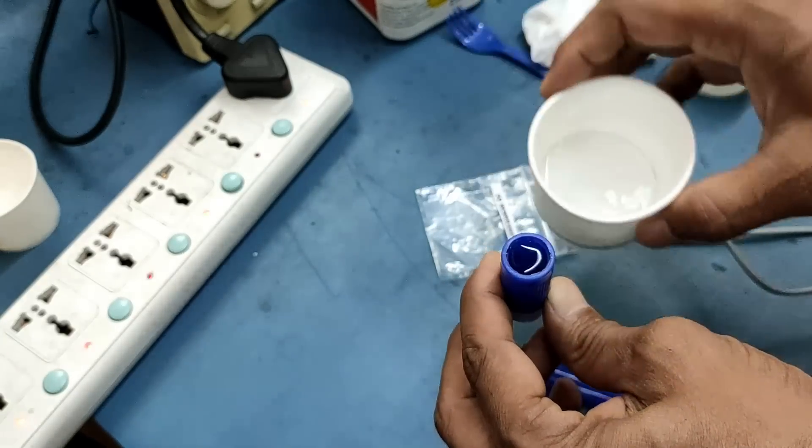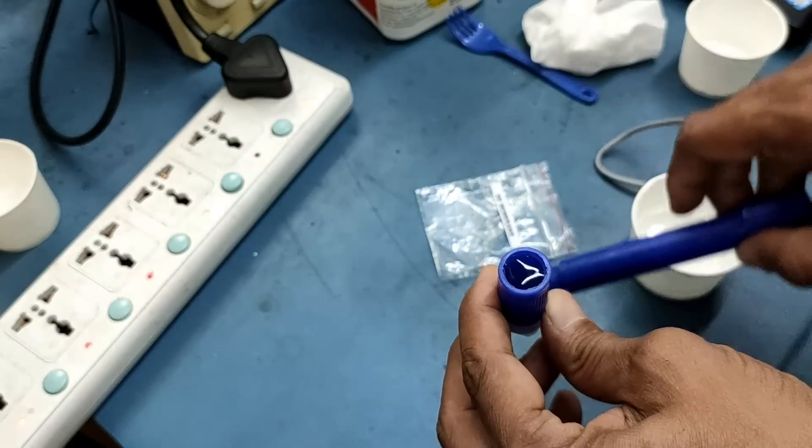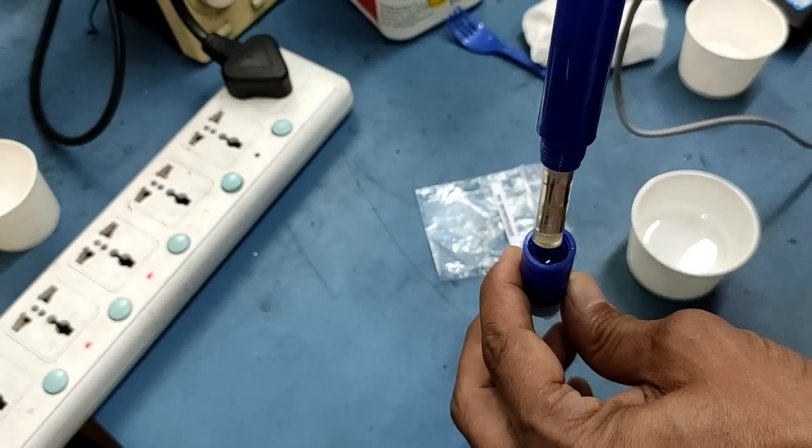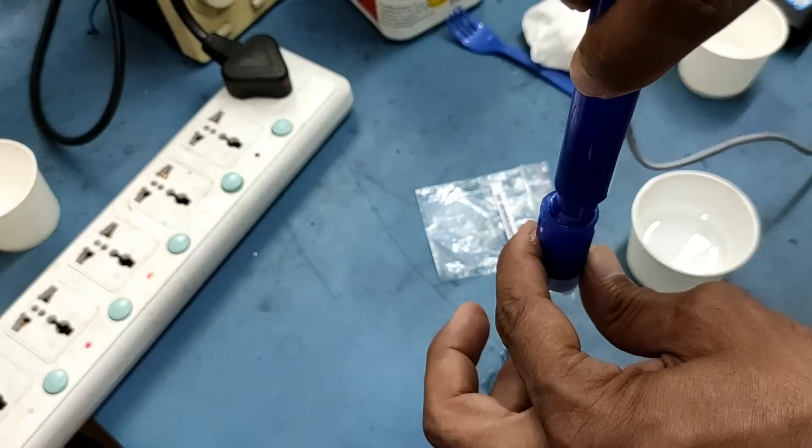It would be nice if a little bit of solution overflows out of the cap to ensure the probe is fully filled with KCL solution and there are no air bubbles in it. 7.5% KCL solution acts as good electrolyte in D.O. probe.